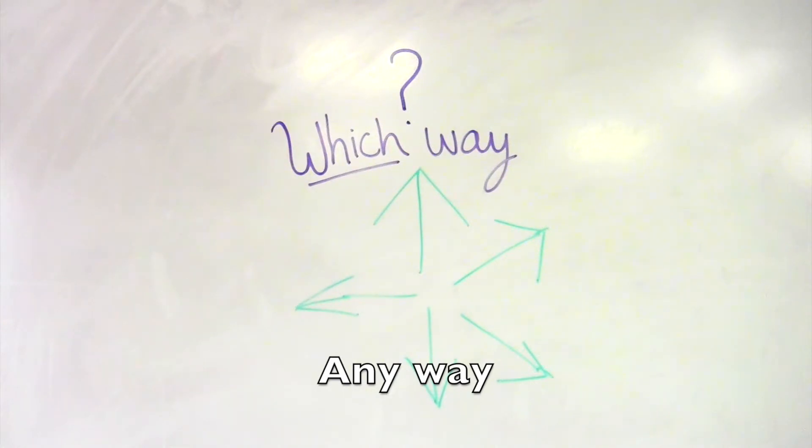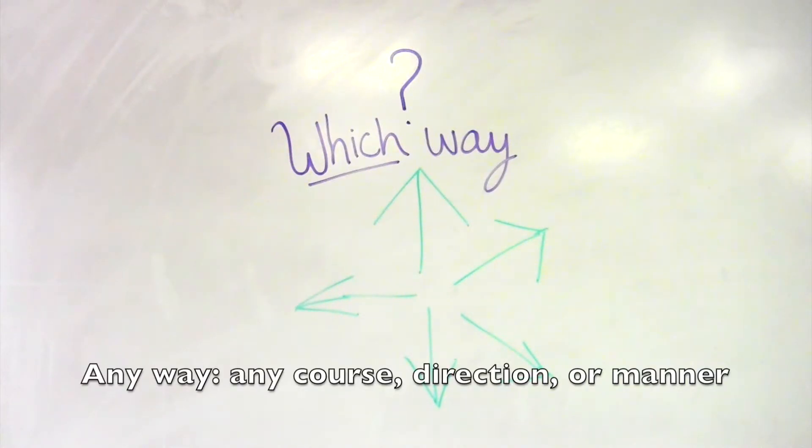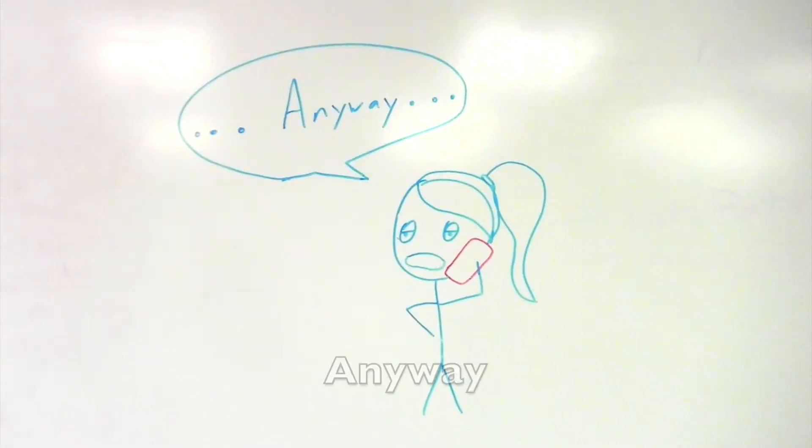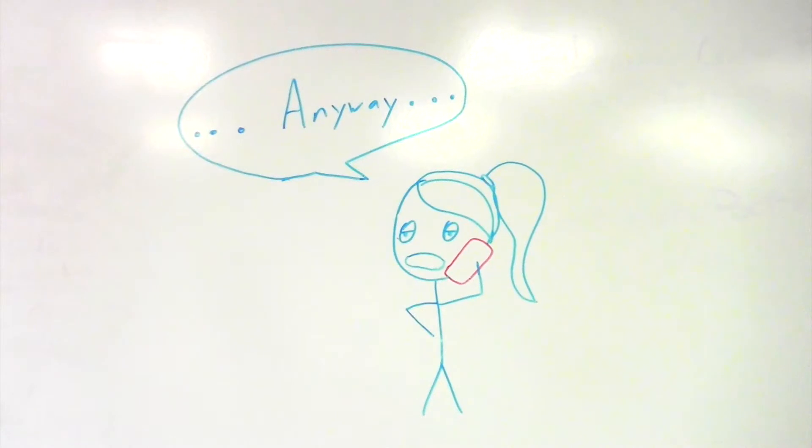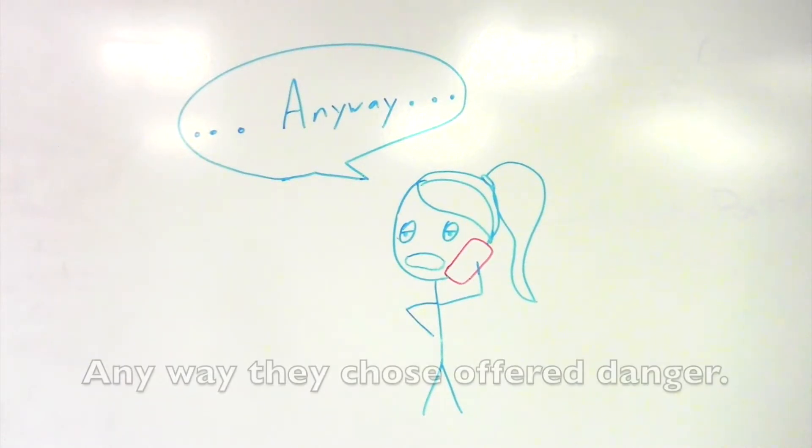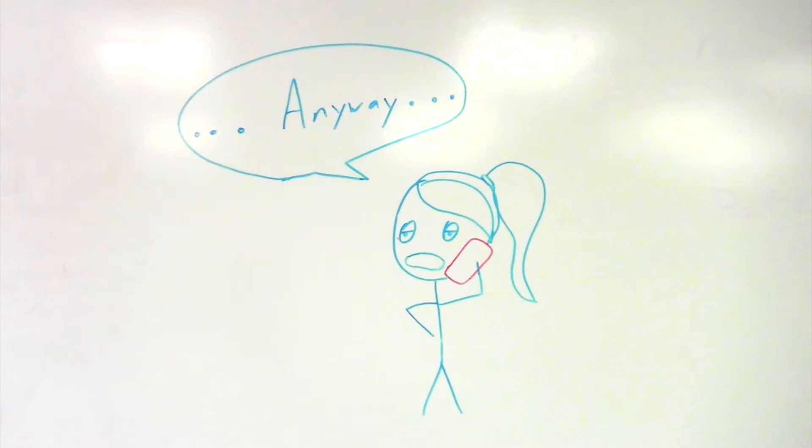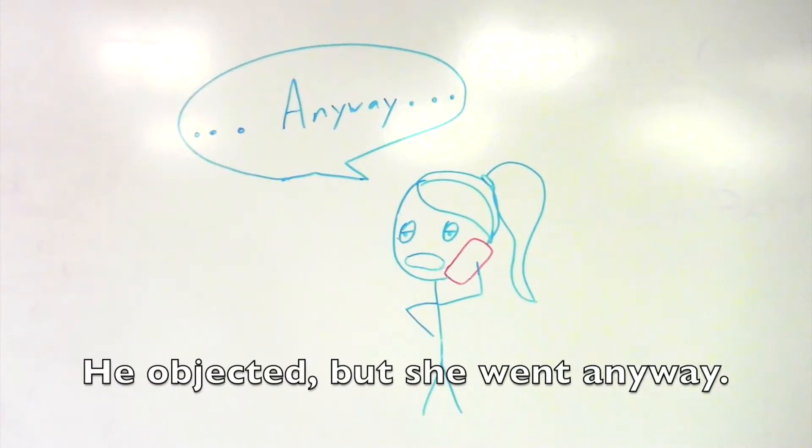Any way as two words is an adverb meaning any course, direction, or manner. Anyway as one word is an adverb meaning at any rate, or nevertheless. For example, one might say, any way they chose offered danger, or as one word, he objected, but she went anyway.